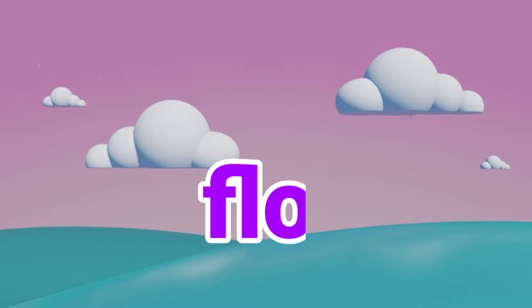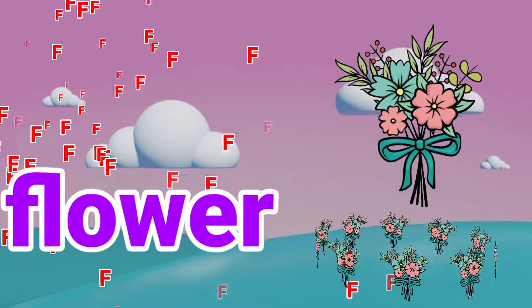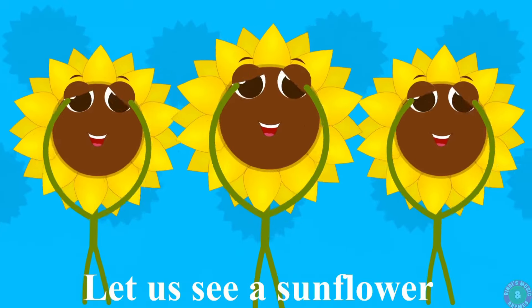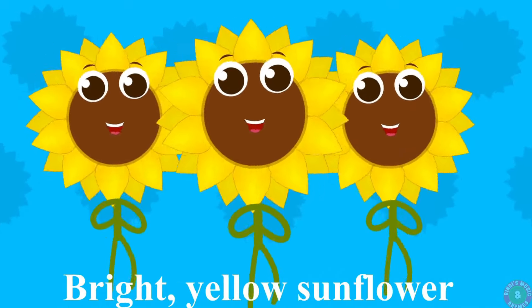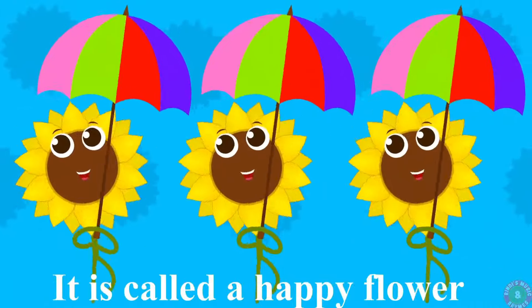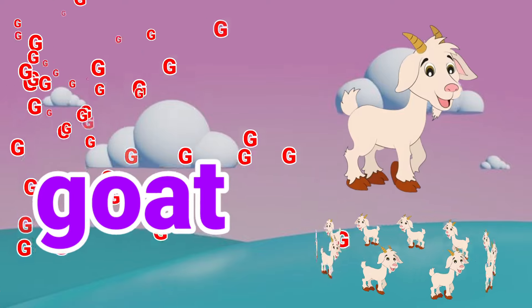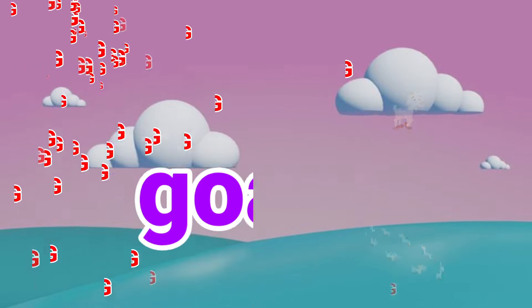F is for Flower. Flower, bright yellow sunflower. G is for Goat.